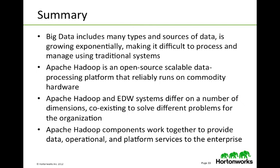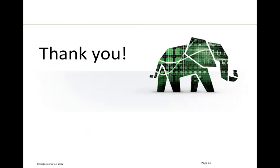In summary, big data includes many types and sources of data, it's growing exponentially, and it's making it difficult to process and manage using traditional systems. Apache Hadoop is an open-source, scalable data processing platform that reliably runs on commodity hardware — no need for RAID or very expensive storage. Apache Hadoop and databases differ on a number of dimensions, so coexisting will solve greater numbers of problems. The Apache Hadoop components that work together to provide data, operational, and platform services are what make Apache Hadoop enterprise viable. Thank you for joining us today — in our second module, we'll dive deeper into Core Hadoop.